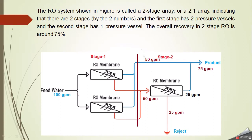Now let's look at what happens with impurities. If 100 GPM of water enters these two membranes and we get 50% recovery, then 50 GPM becomes the permeate product and the remaining 50 GPM concentrate enters the next membrane. With 50% efficiency again, 25 gallons become product and 25 gallons are rejected. So the overall efficiency of this two-stage system is 75%.